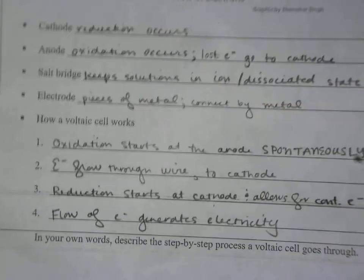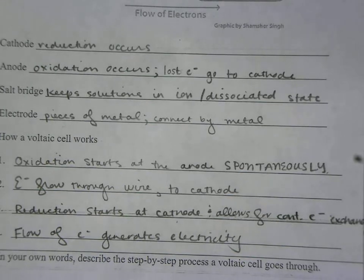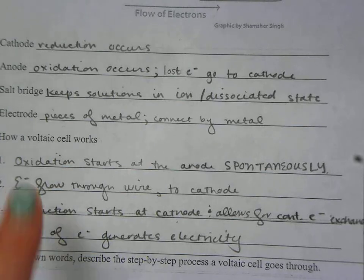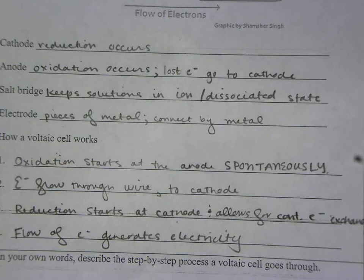So a voltaic cell works in four steps. We're going to start off with the first step. Oxidation starts at the anode and it has to occur spontaneously. It has to occur without me giving any energy to that. So oxidation is going to start at the anode spontaneously. Those electrons will flow through the wire to the cathode. We go from A to C, anode to cathode.